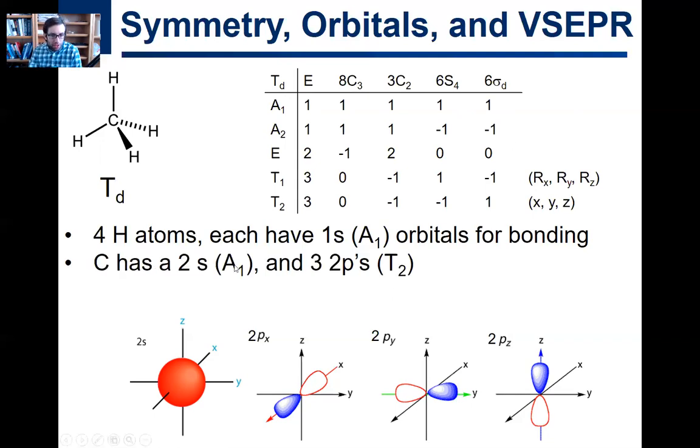Here's the problem. You can make a bond with the 2s orbital. That's all good, because that's also a sphere. So you have A1, 2s on carbon, and A1 symmetry of the 1s on hydrogen. The problem is the 2p's. The 2p's have a symmetry of T2.